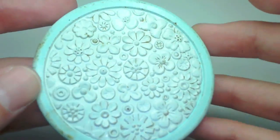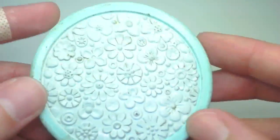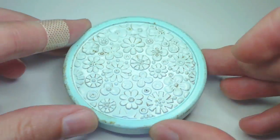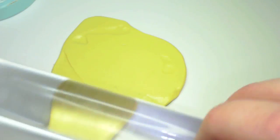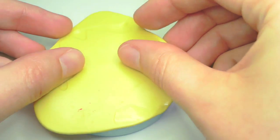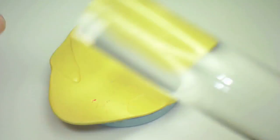If you need to make a flexible texture plate of your own, you can find a texture that you like, roll out some mold maker, then roll that onto the texture.